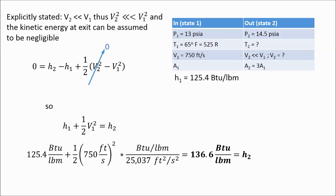Plugging in the numbers for each quantity, we then find that the enthalpy at the exit, h2, is 136.6 BTU per pound mass.